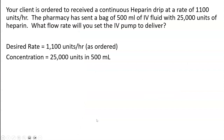So the question reads: your client is ordered to receive a continuous heparin drip at the rate of 1,100 units per hour. The pharmacy has sent a bag of 500 ml of IV fluid with 25,000 units of heparin. What flow rate will you set the IV pump to deliver?